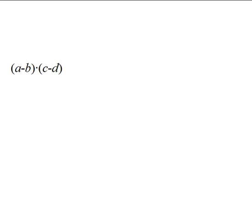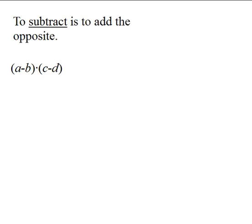Some students are confused when there is subtraction involved instead of addition. For example, a minus b times c minus d. But the key to simplifying when there is subtraction involved is to remember that subtraction is the same thing as addition. Subtracting is just like adding the opposite. If you're not used to thinking in this way, then you might want to practice rewriting this expression by adding the opposites.